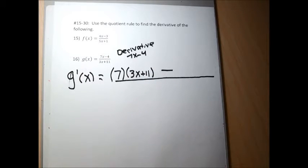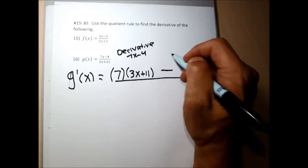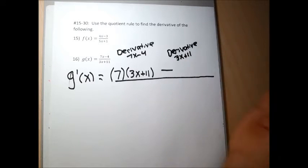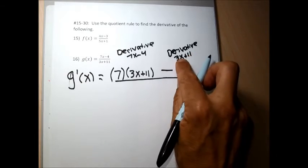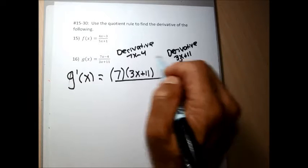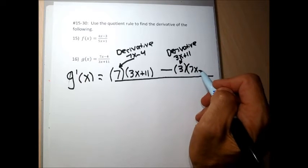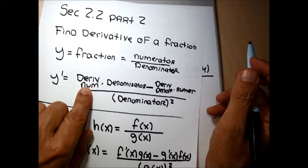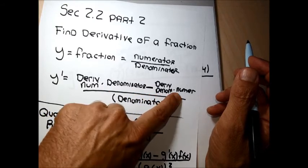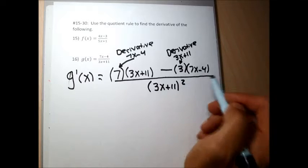After the minus sign, I need the derivative of the denominator, 3x plus 11. The derivative of 3x is 3 and the derivative of 11 is 0, so the derivative of 3x plus 11 is just 3. Next to that derivative I write the entire numerator, 7x minus 4. So the full numerator is: derivative of numerator times denominator, minus derivative of denominator times numerator — all over the denominator squared, (3x plus 11) squared. That's the entire derivative for problem 16.